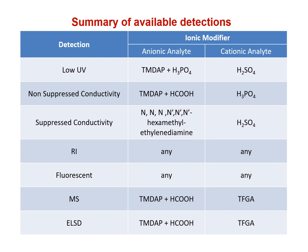As we've seen, BIST can support a wide variety of detection modes for all kinds of separations. However, not every ionic modifier will work ideally with every detection mode. This table shows our recommendations for which ionic modifier should be used depending on the detection mode and polarity of the analyte of interest.